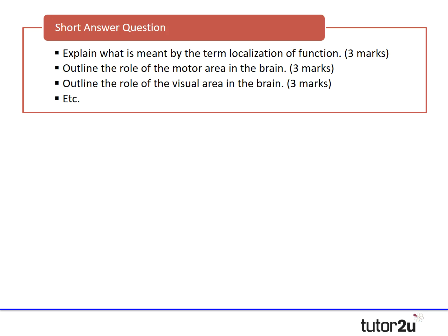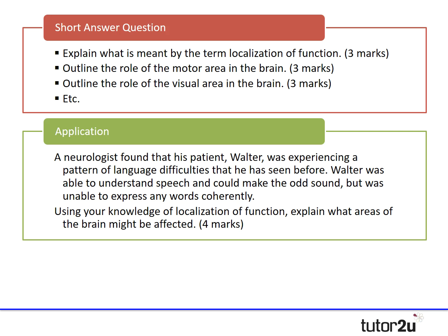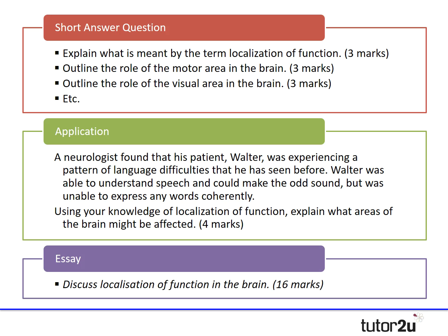The other types of questions include short answer questions, with a whole range of possibilities — you could be asked to explain what is meant by localisation of function, outline the role of the motor area, or the visual area, and so on. There are no application questions in the sample assessment material, so I've created one: a neurologist found his patient Walter was experiencing language difficulties — able to understand speech and make the odd sound, but unable to express words coherently. Use your knowledge of localisation of function to explain what areas of the brain might be affected.